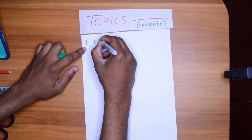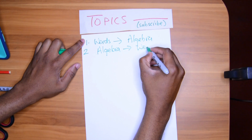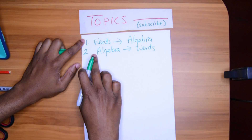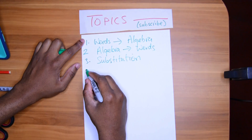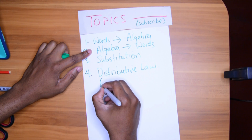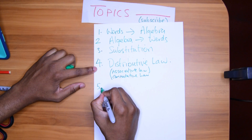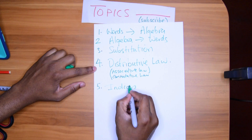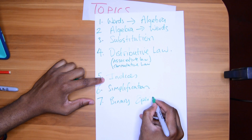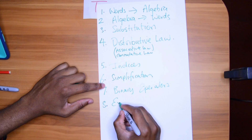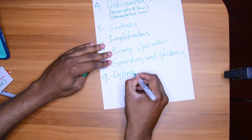The subtopics are: one — words to algebra; two — algebra equation to word equation, and word equation to algebra equation; three — substitution; four — distributive law, associative law, and commutative law; five — indices; six — simplification; seven — binary operators.